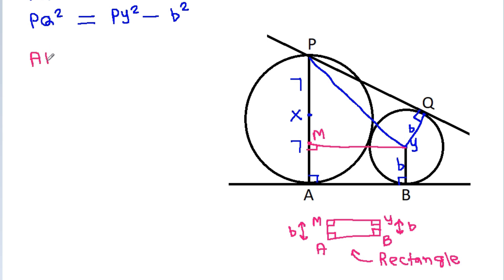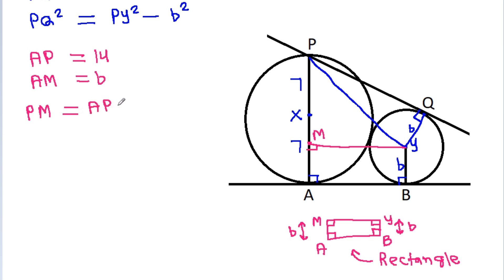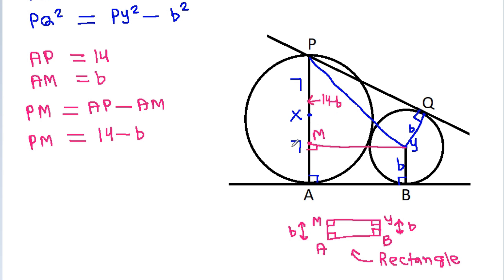We have AP = 14 and AM = b. So PM = AP - AM = 14 - b.